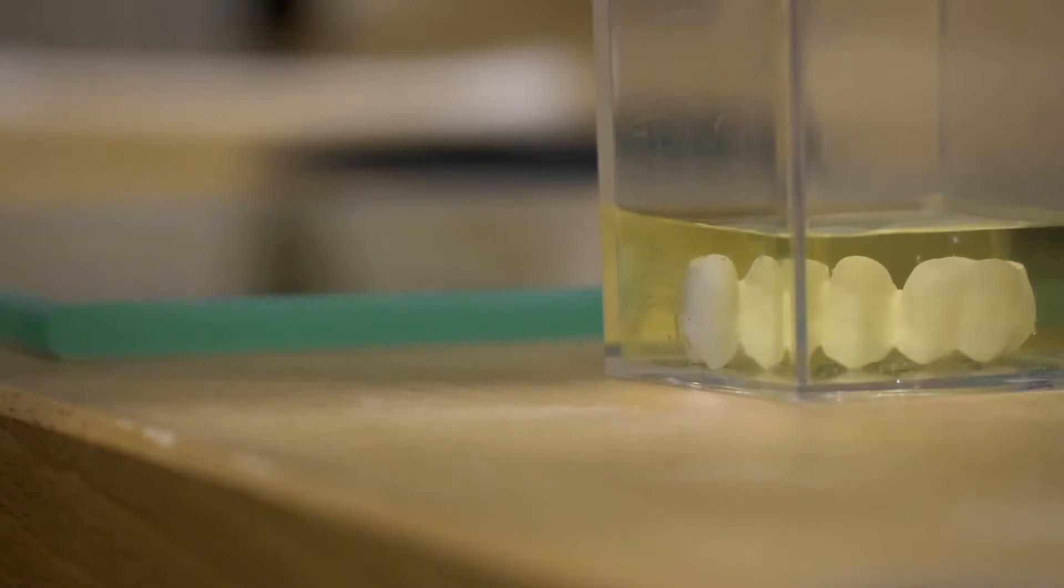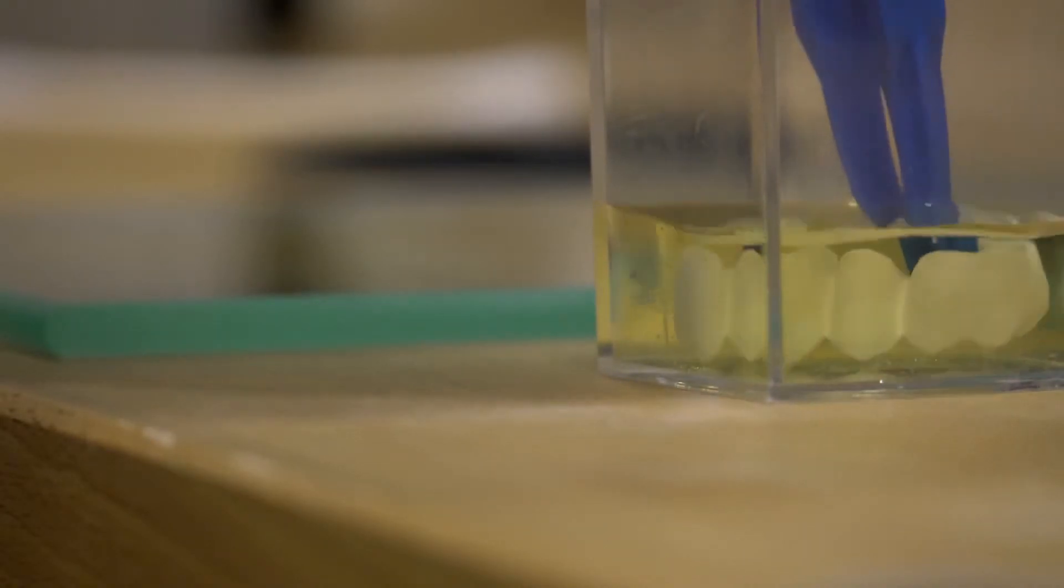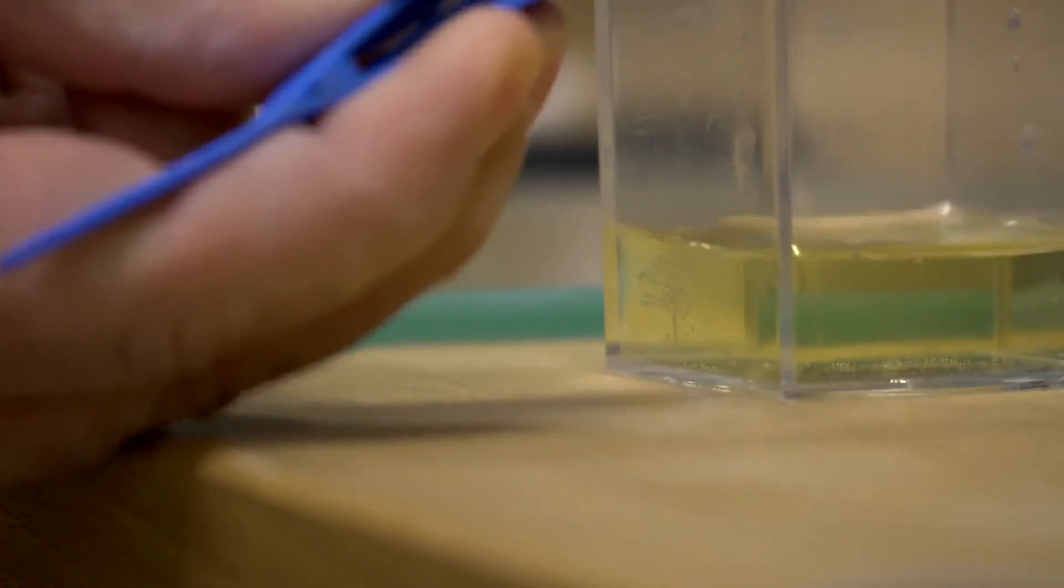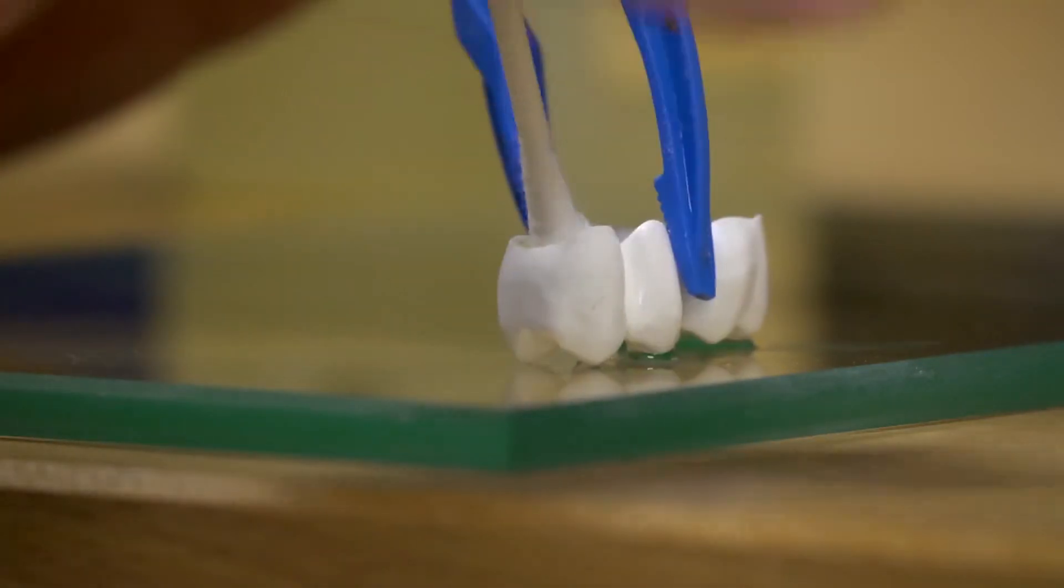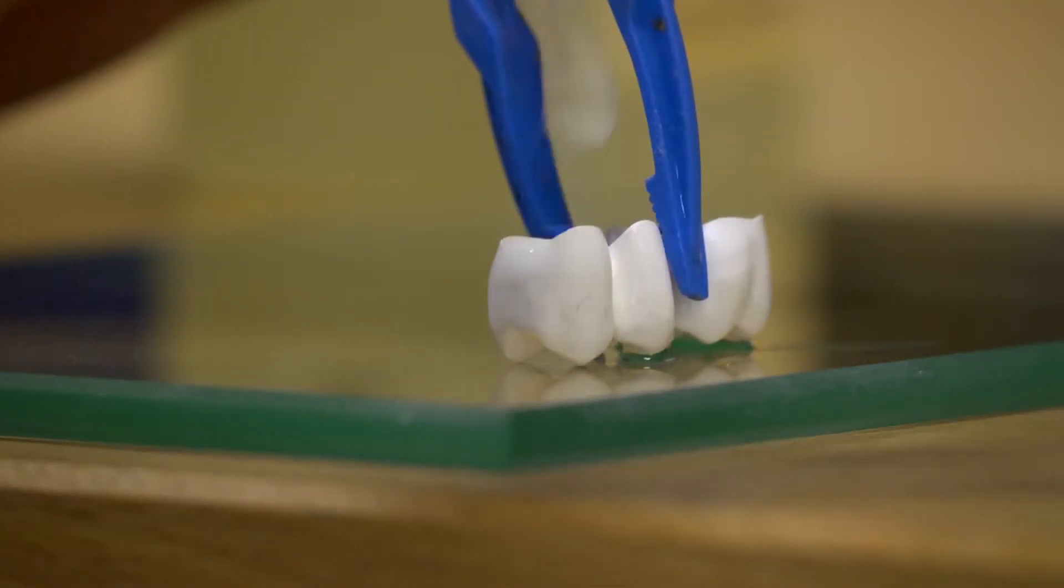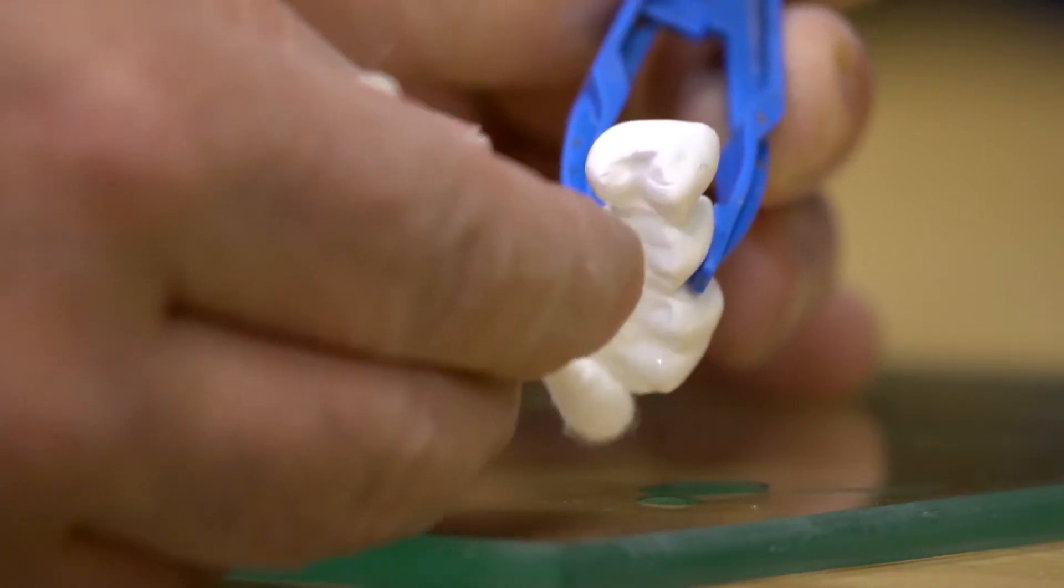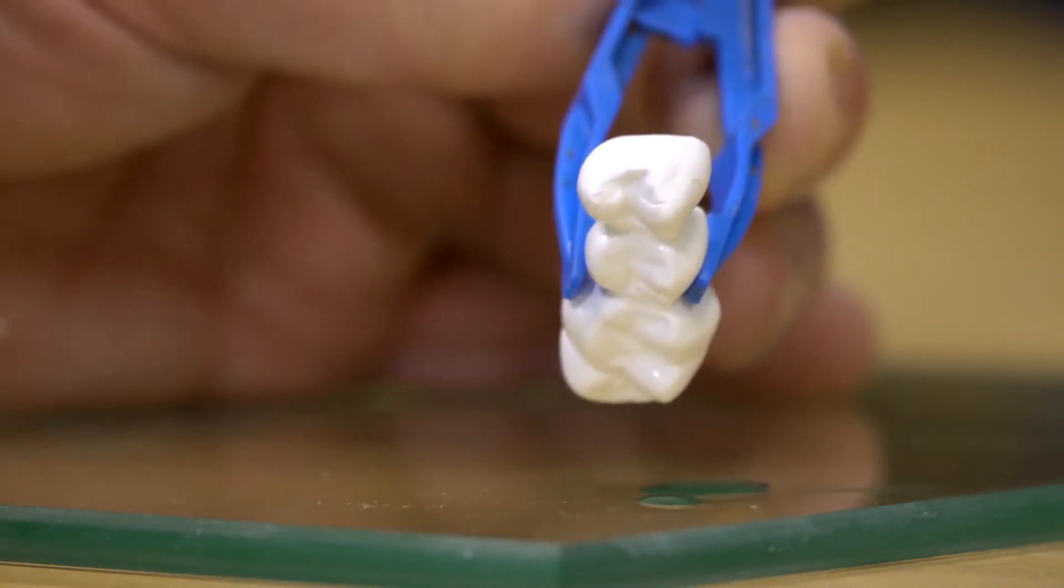Remove the restoration from the glass vessel using a pair of plastic tweezers. Roll the end of a tissue and dab to remove the excess liquid. Now, place the recently colored restoration onto a non-absorbent surface such as a glass slab for at least 15 minutes.